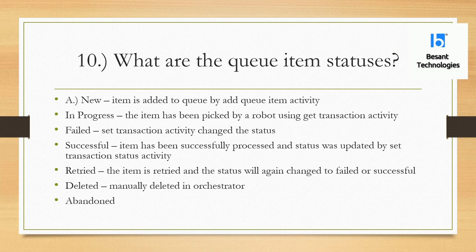What are the queue item statuses? Whenever we add items to the queue, the first status is New — it can be picked by any process using the Get Transaction Data activity. The next status is In Progress — whenever a bot picks an item from the queue, the status changes from New to In Progress.